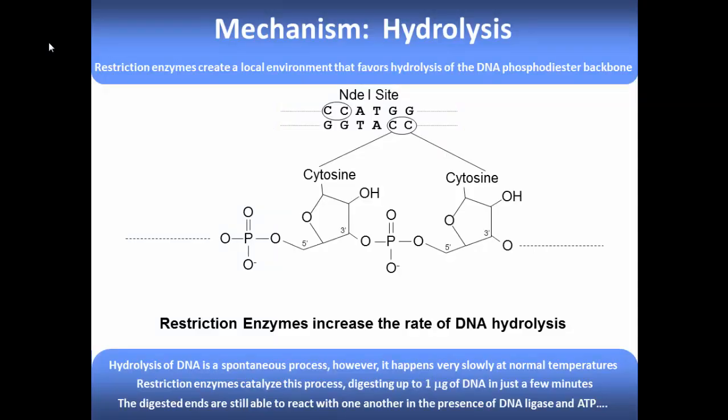Before we set up our reaction, let's discuss how restriction enzymes actually work. Most restriction enzymes share a common reaction mechanism in which DNA is hydrolyzed at the phosphate in the phosphodiester backbone. We'll talk about the specific restriction enzyme NDE1. This enzyme derives its name from the organism in which it was first isolated, Neisseria dentrificans — its first letter comes from the first name and the next two letters from the second name. The designation '1' means it was the first restriction enzyme isolated from that organism.